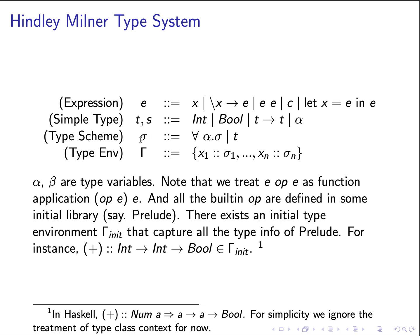For the third category we have something called the type scheme. In some research papers, the simple type is referred to as the monotype and the type scheme is referred to as the polytype. The difference is that a type scheme denoted by sigma has a for-all quantifier followed by a type variable and followed by another type scheme, denoting that the type variable alpha is polymorphic in sigma. The alternative is just a simple monomorphic type. The type environment maps variables to type schemes rather than just to types.